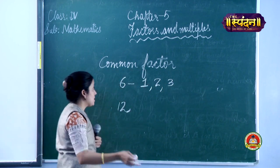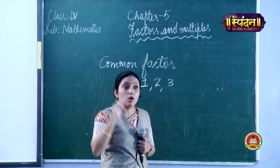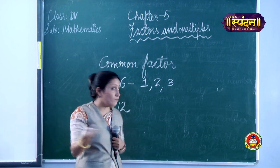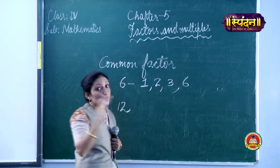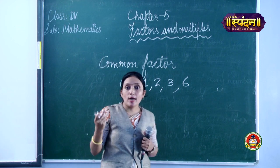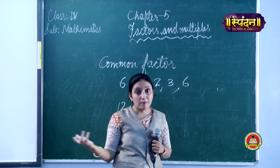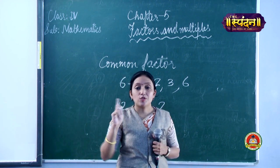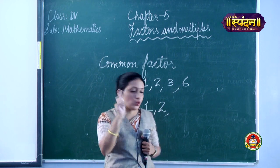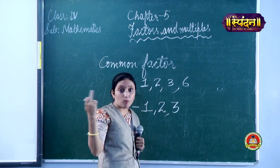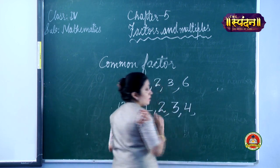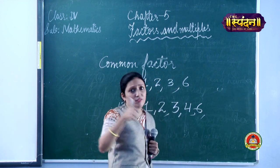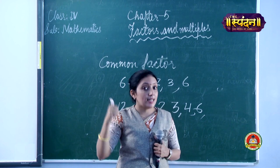Now for 12: 1 is a factor, 2 is a factor (2×6=12), 3 is a factor and 4 is a factor (3×4=12), 5 is not, 6 is a factor (6×2=12), then 7, 8, 9, 10, 11 are not, and the last factor is 12. So factors of 12 are 1, 2, 3, 4, 6, and 12.